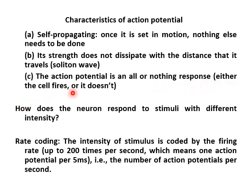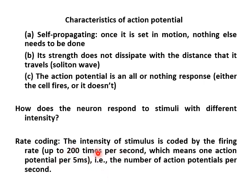So the question is: how does a neuron respond to stimuli with different intensities? The underlying mechanism is called rate coding, meaning the intensity of a stimulus is coded by the firing rate, up to about 200 times per second — that's one action potential per five milliseconds, which is very rapid. This is the case with a very intense stimulus; if the stimulus is not intense, the firing rate would be much smaller.